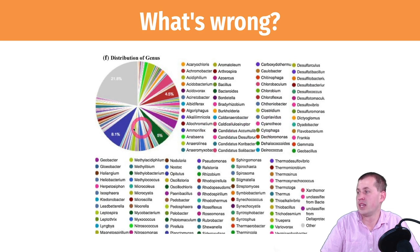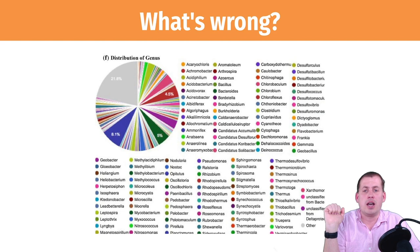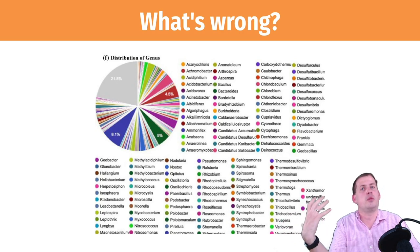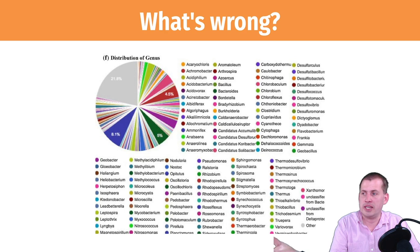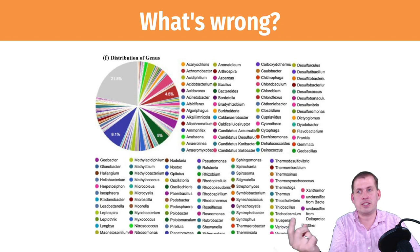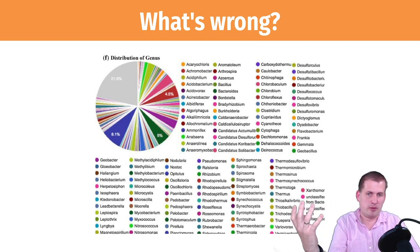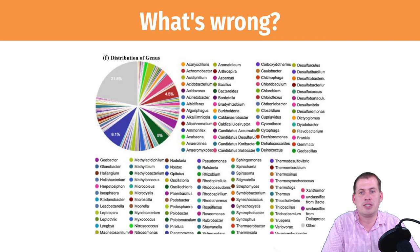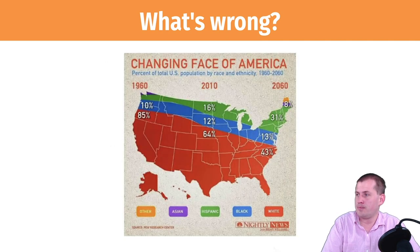The biggest issue with that pie chart is that there are way too many slices — it's impossible to tell which genus corresponds to which percentage. Going through Kieran Healy's checklist: there are perceptual issues from the pie slices, substantive issues from too many variables mapped onto one chart, and aesthetic issues — the colors lack contrast, making it especially difficult for colorblind viewers. The authors may have had honest intent, but it fails on aesthetics, substance, and perception.